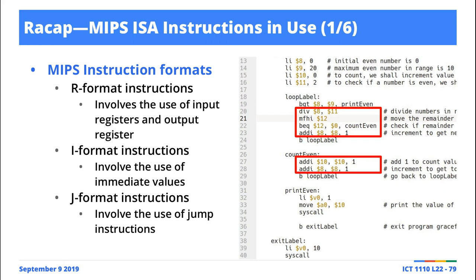I-format, and J-format. When you see a code fragment like this, you must be able to identify which one is R-format and which is I-format.